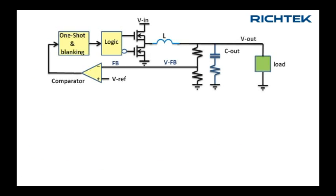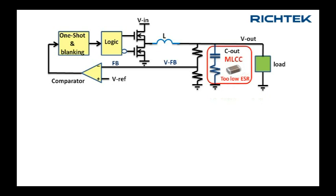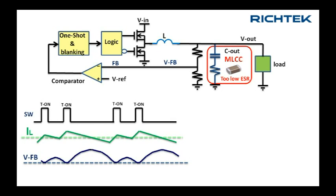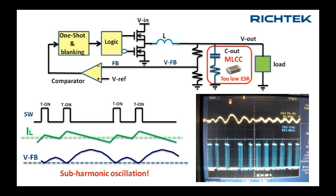Another problem of traditional COT converters is the fact that they need a certain amount of output capacitor ESR to work in a stable manner, normally requiring expensive polymer output capacitors. If you use the cheaper low ESR ceramic output capacitors, the phase shift in the output voltage ripple will result in unstable switching, like sub-harmonic oscillation.